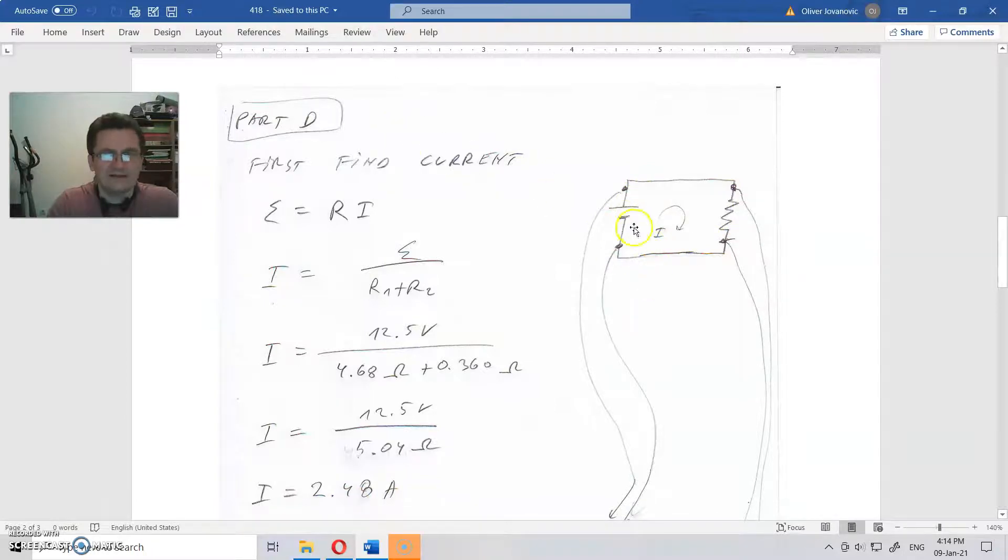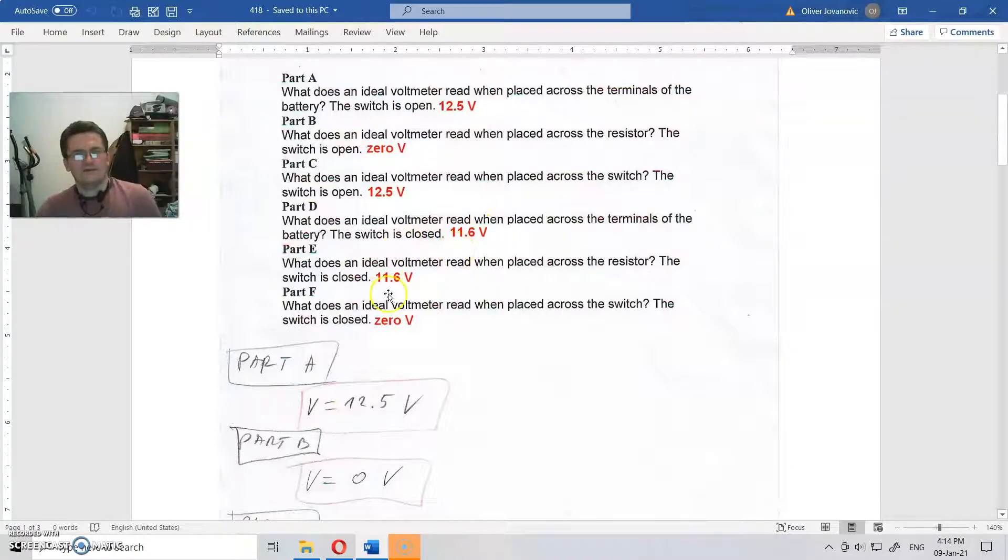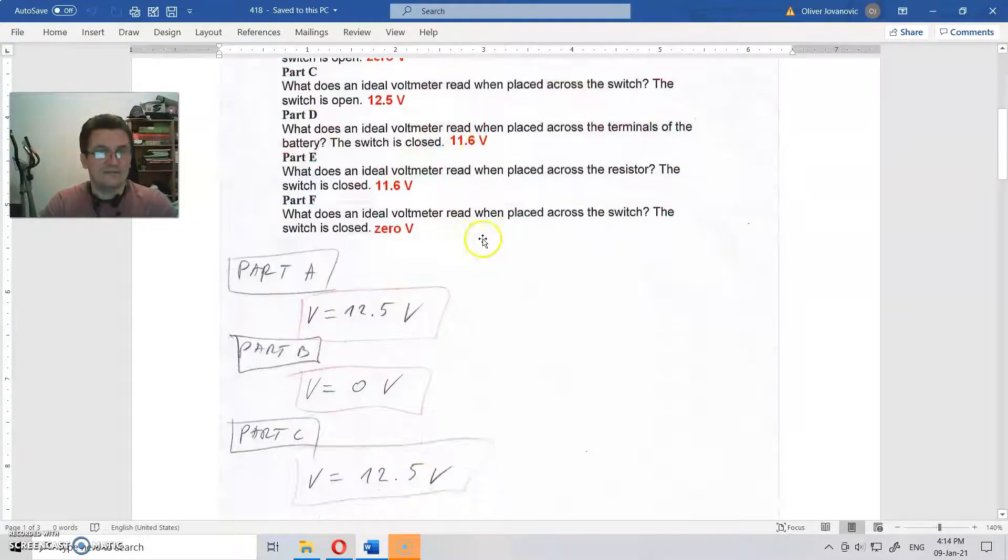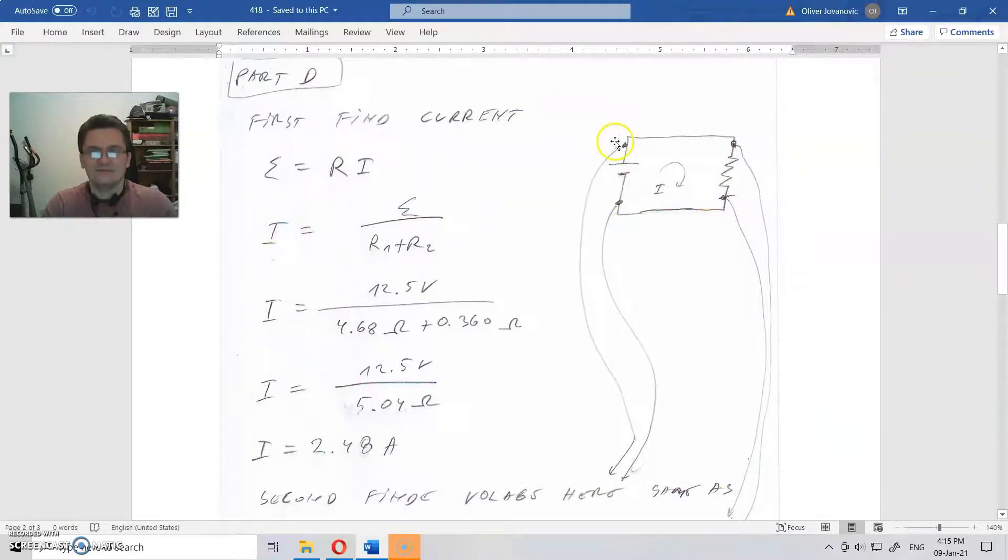Now for Part D, what is the question? What does an ideal voltmeter read when placed across the terminals of the battery? Now, what does the ideal voltmeter read when placed across the resistor? Pay attention here. There is the same voltage. Why? Because that is the same thing. This thing here is that part. When the switch is closed, current moves. The reading here is the same as the reading here.